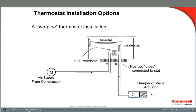This diagram is of a two-pipe thermostat installation. In a two-pipe installation, the main air tubing and the branch line tubing are connected directly to the thermostat. The ports on the back of the thermostat are marked M and B. Notice that the restrictor and nozzle flapper assembly are both part of the thermostat. The air first passes through the restrictor, then to the nozzle where it is allowed to bleed off. The restrictor limits the supply of air to the thermostat to no more than can be bled off by the nozzle, making it possible for the thermostat to control the branch line pressure.